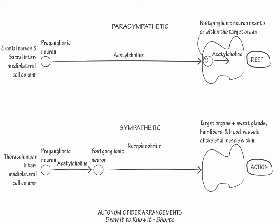The exceptions are the postganglionic sympathetic fibers to sweat glands, which release acetylcholine, and the adrenal medullary cells, which mostly release epinephrine or adrenaline. As a helpful mnemonic to remember the innervation for male sexual function: parasympathetic equals point, meaning erection, and sympathetic equals shoot, meaning ejaculation. We leave out any discussion of neuropeptides here for simplicity.